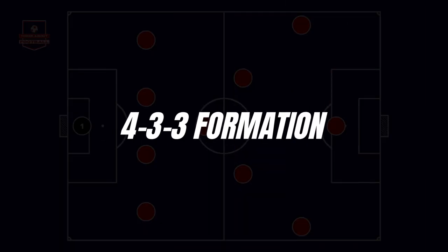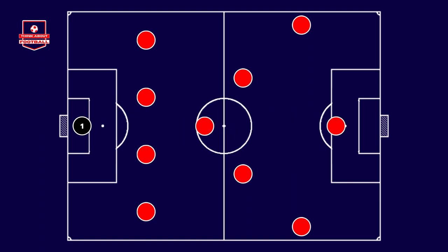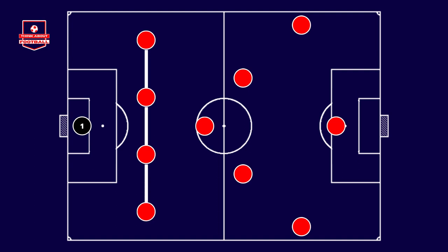The 4-3-3 is one of the most commonly used tactical systems in contemporary football. The distribution of players on the field is quite evident. Aside from the goalkeeper, there are four players in the defensive sector, three in the midfield sector, and three in the attacking sector.